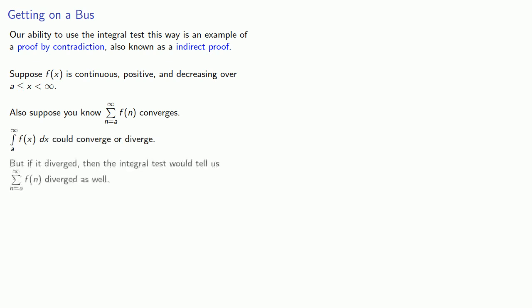But if the integral diverged, we could then use the integral test, and that would tell us that the series diverged as well. But that's a contradiction, and so we know the integral can't diverge, it must converge. And we get a similar result if we know that the series diverges.